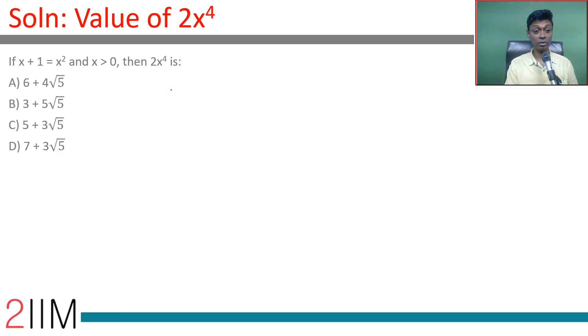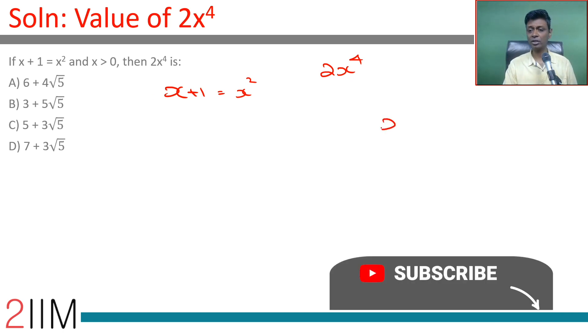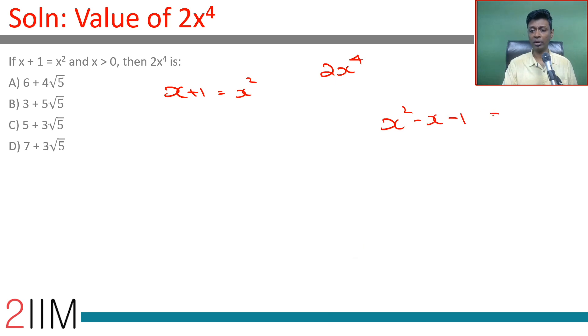If x + 1 = x², it's a wonderful algebraic question. We want to find 2x⁴. We can rearrange to x² - x - 1 = 0.